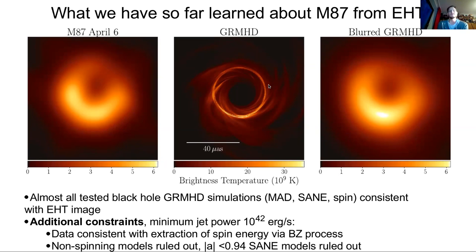And actually the models do. The data is consistent with the extraction of spin energy by this Blandford-Znajek mechanism that I've illustrated. But we actually need to tap spin energy. So that's good. And all of the models that are low spinning are essentially ruled out. So we're starting to place some constraints on what can be the spin of the supermassive black hole in M87 right now.